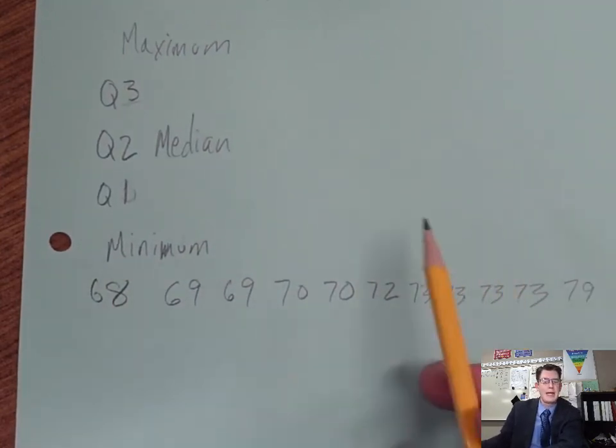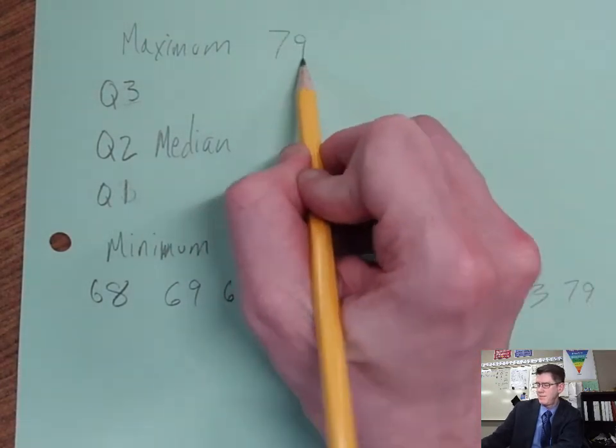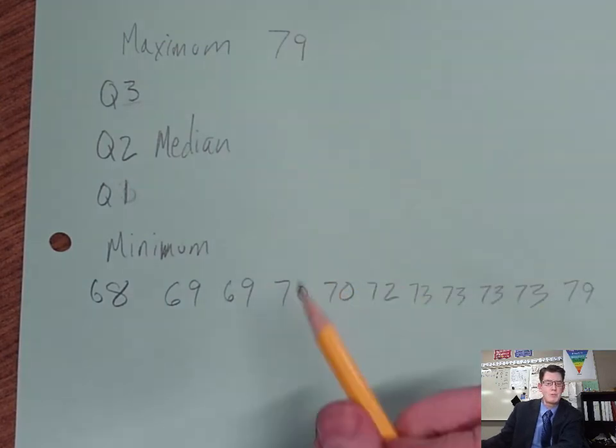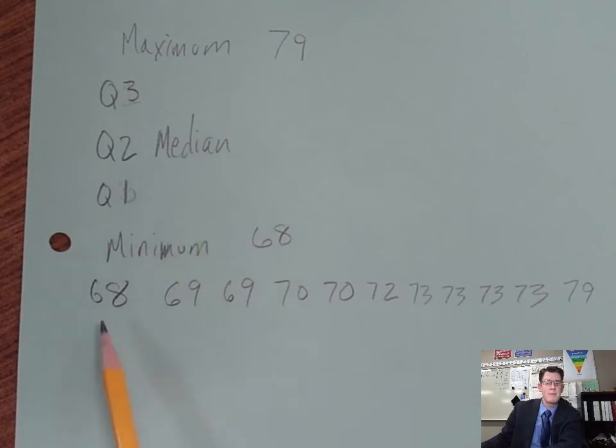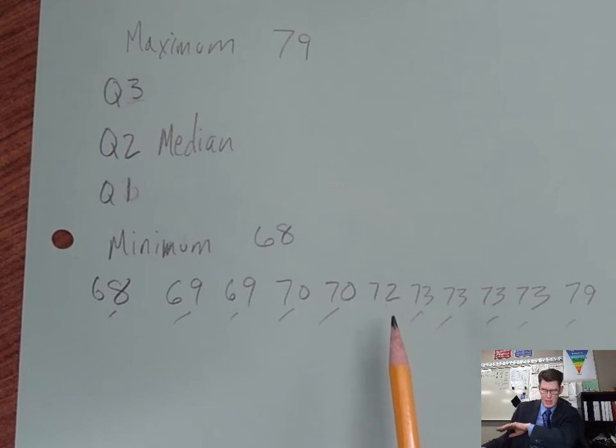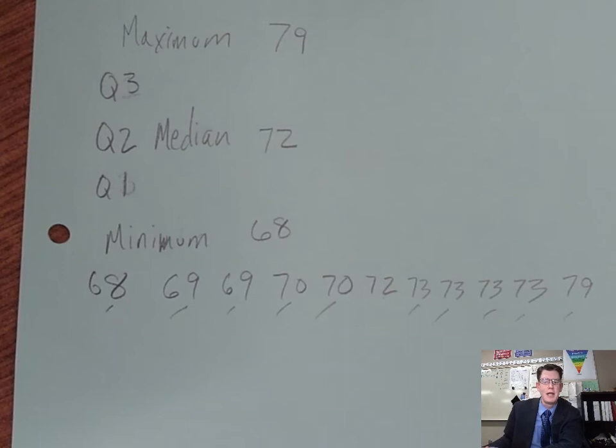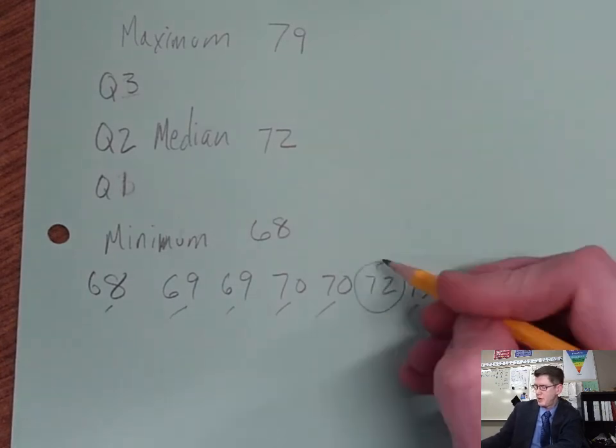So we put the data in order. What's the maximum? Well, that's up here, we've got 79. What's the minimum, what's the smallest? That's 68. Now we learned how to find the median before, so we come over here and find the median. Counting until I find the middle number - if I did this right, 72 is the median, that's the middle number.